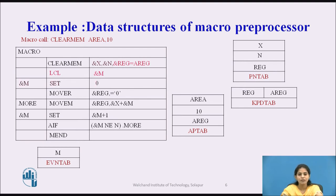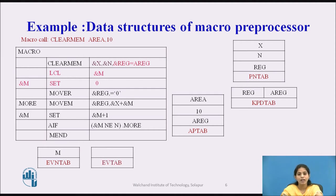The next statement we process is &M SET 0. The SET statement assigns the value 0 to the expansion time variable M. We enter that value into the EV tab (expansion time variable table), entering the value 0.